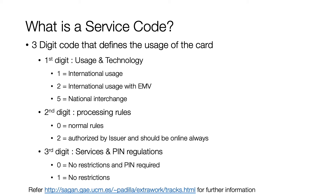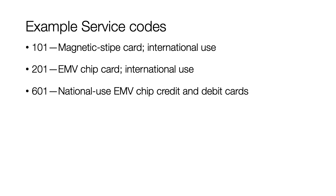The first digit of the service code defines usage and technology — for example, '1' means it can be used internationally, and '2' means it can be used internationally and is a chip card. The second digit identifies the processing route — for example, '2' means it must be authorized by the issuer and the transaction should always be online. The third digit covers the type of transactions that can be done. Sample service codes: 101 is a magnetic stripe international use card, 201 is an EMV chip card, and 601 is a national use EMV chip card.